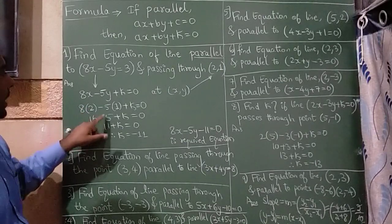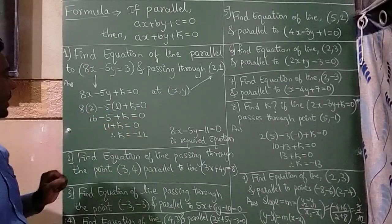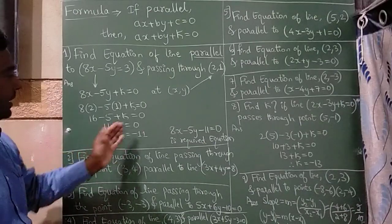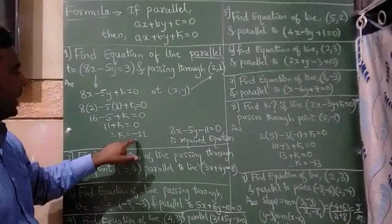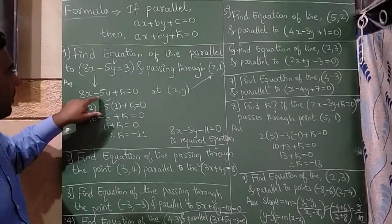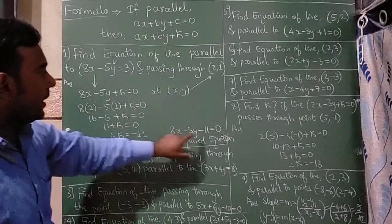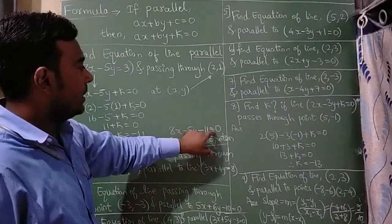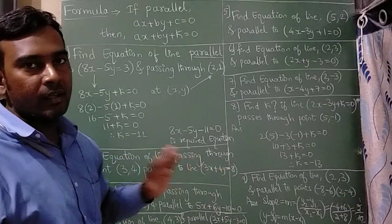2 8s are 16 minus 5 1s are 5 plus k is equal to 0. So 16 minus 5 is 11. So this 11 is shifted to the right and it will become minus 11. So here what I have done is 8x minus 5y in place of k I have written minus 11. So the k value we have got minus 11 is equal to 0 is the required equation.